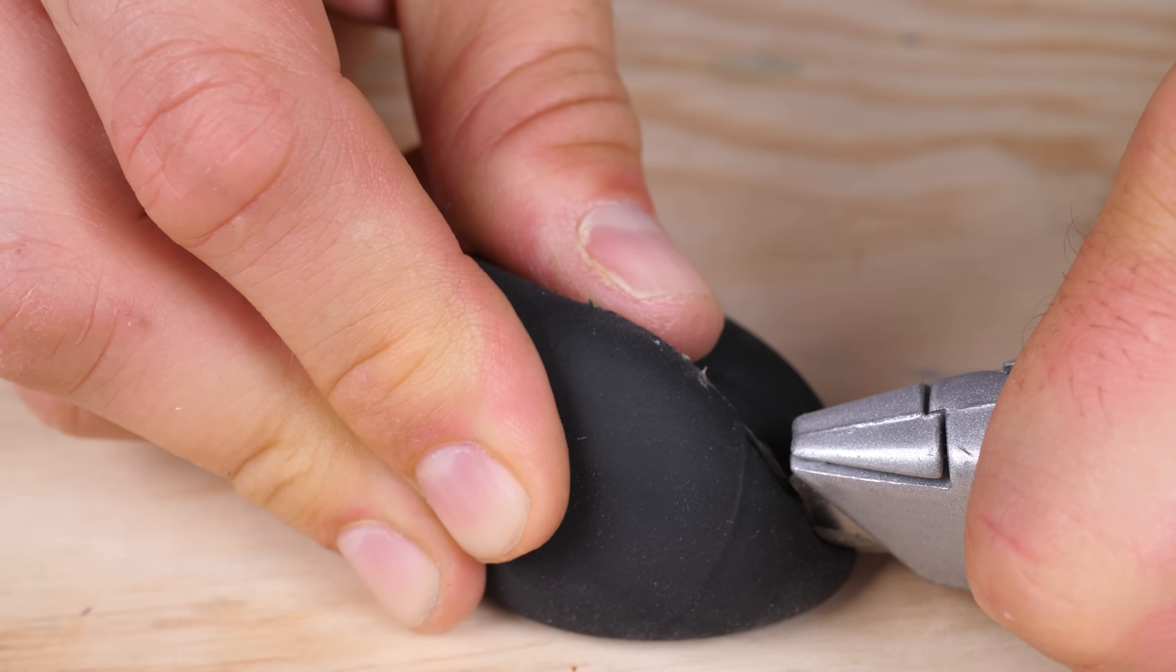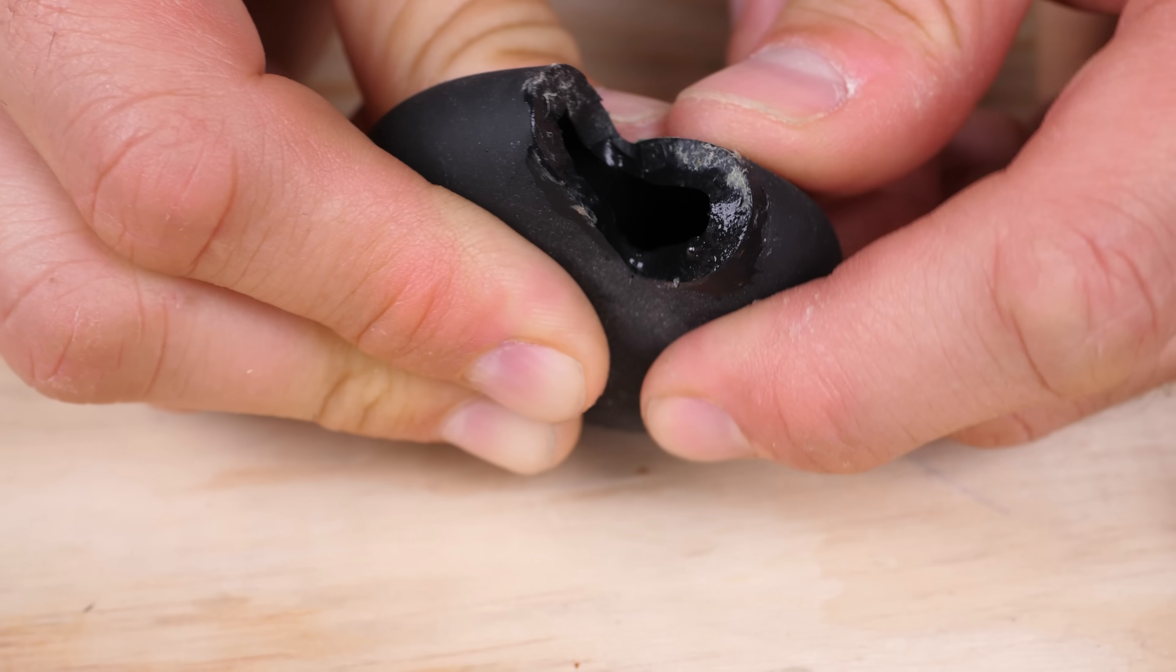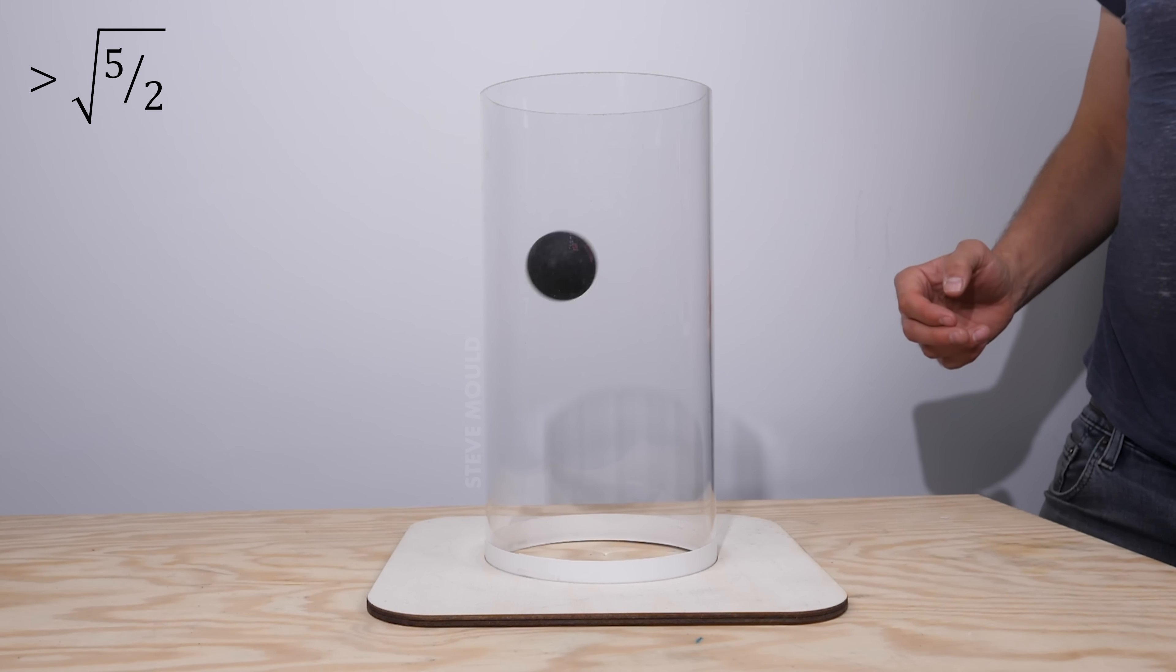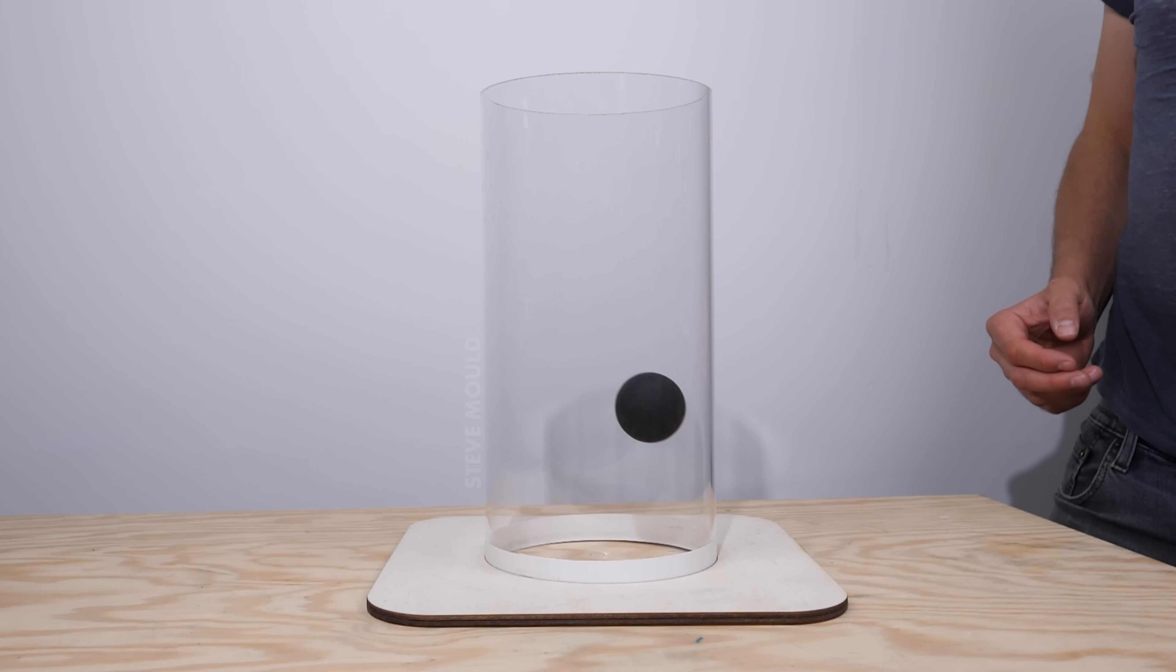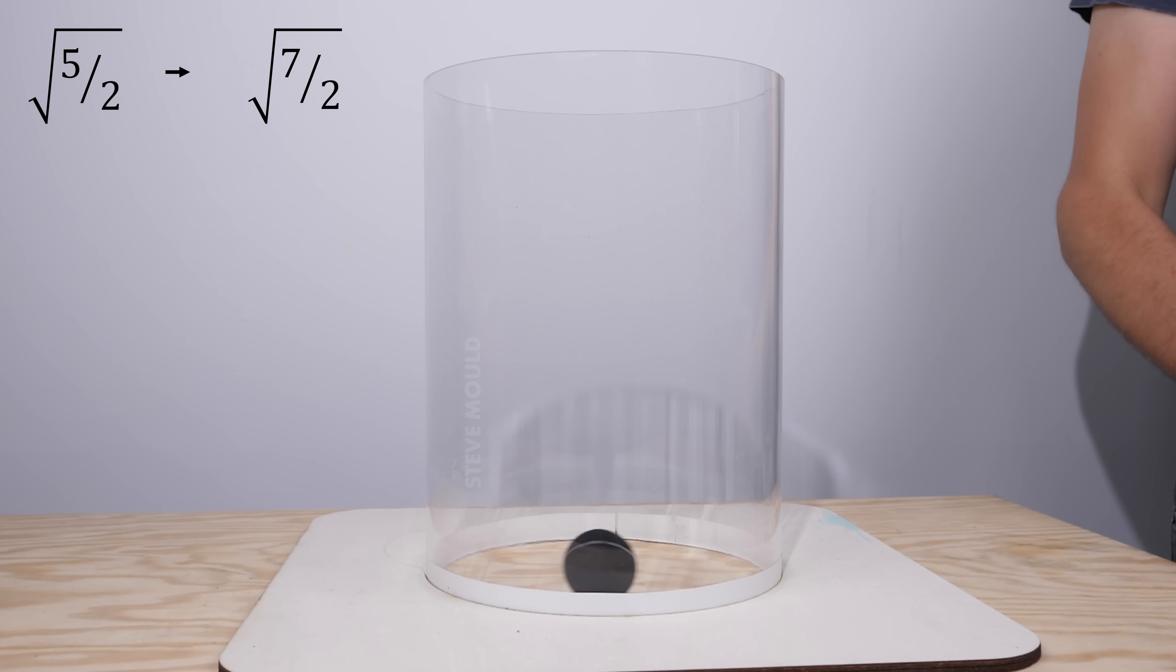Nothing in the real world is. Because the walls of a squash ball are quite thick, we should expect the ratio to be a little higher than the square root of 5 over 2. That's because as the wall thickness increases, you eventually end up with a solid ball. So we should expect the ratio to increase from the square root of 5 divided by 2 towards the square root of 7 divided by 2.